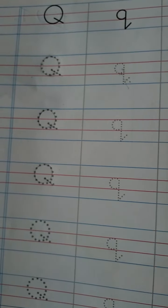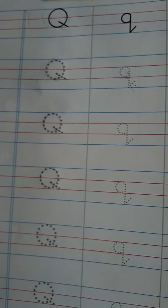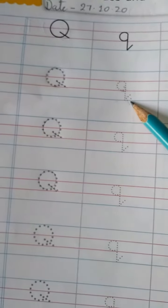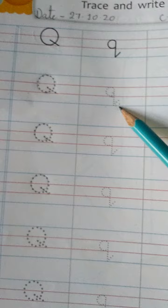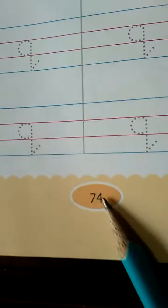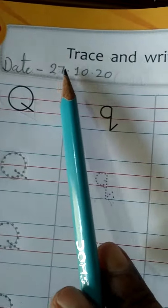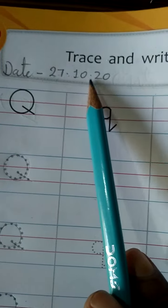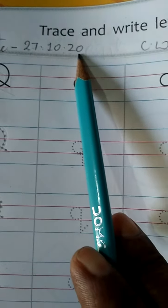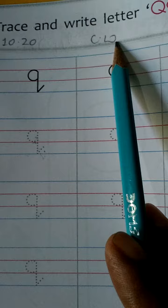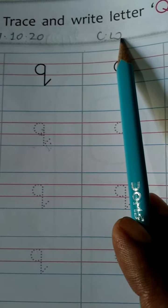Today I am going to teach you capital letter Q and small letter Q. Take out your English writing book, page number 74. Mention the date, 27.10.20 and CW, that is your classwork.